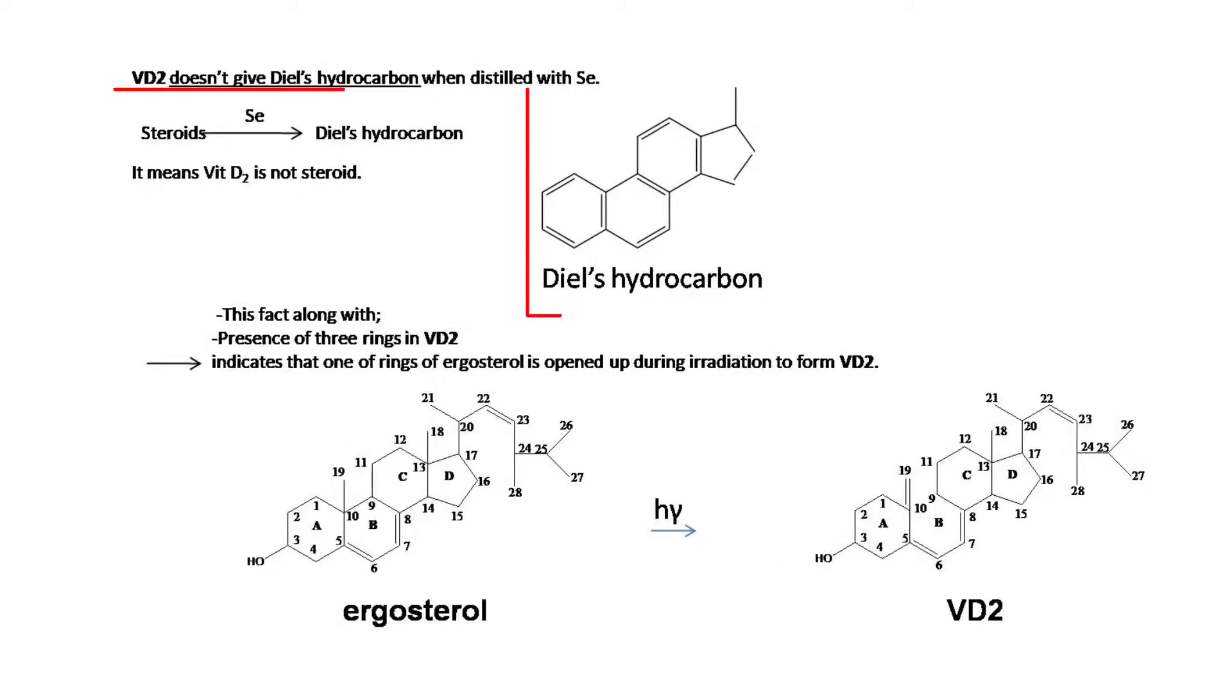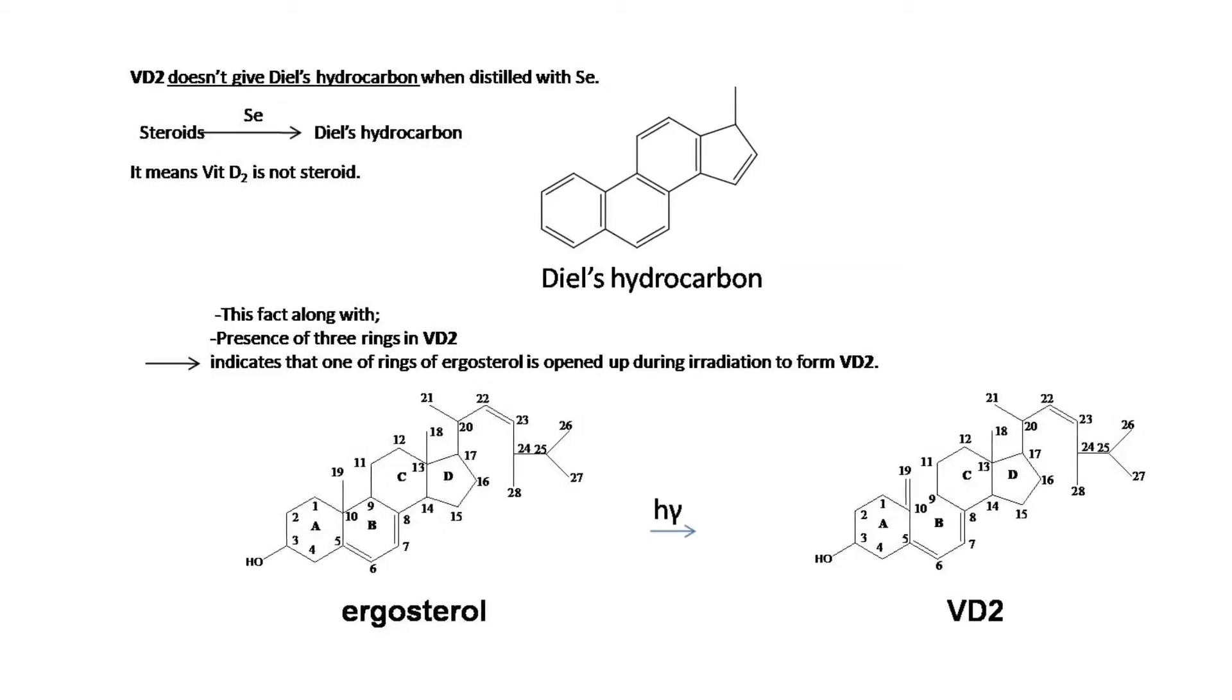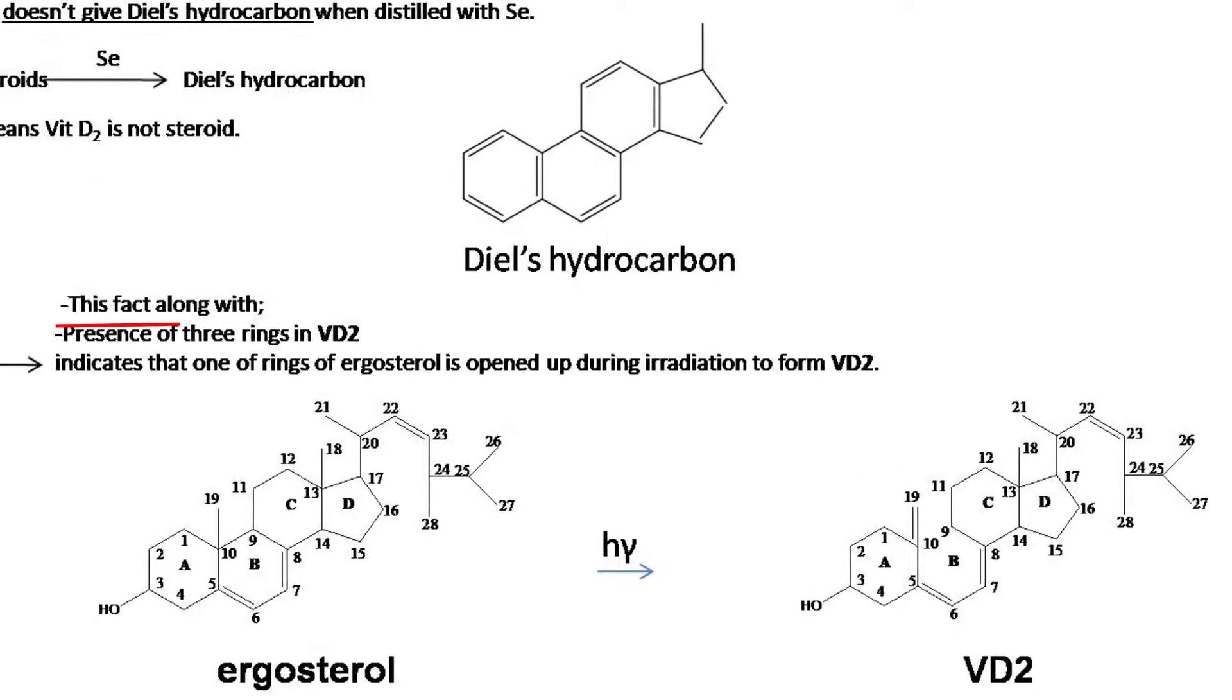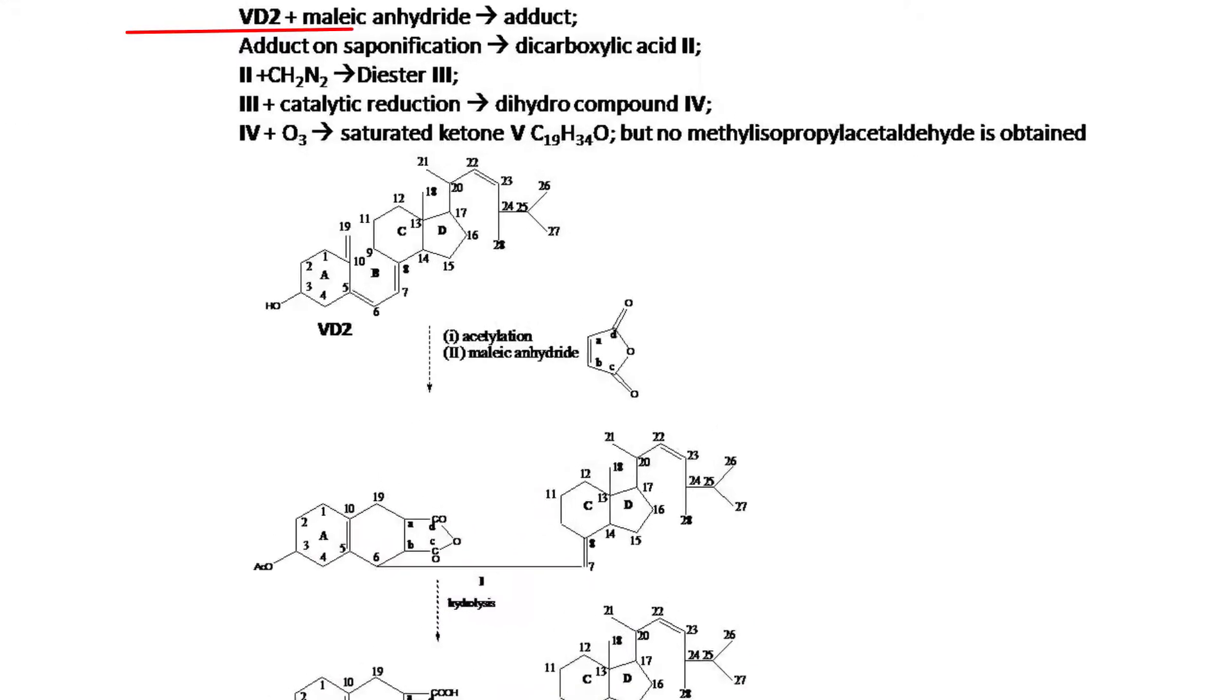Vitamin D2 does not give Diel's hydrocarbon when distilled with selenium. Steroids on selenium dehydrogenation give Diel's hydrocarbon. This means that vitamin D2 is not a steroid. This fact, along with the presence of three rings in vitamin D2, indicates that one of the rings of ergosterol is opened up during irradiation to form vitamin D2.